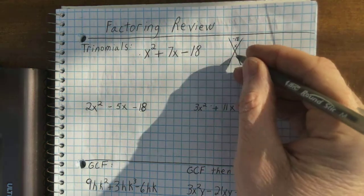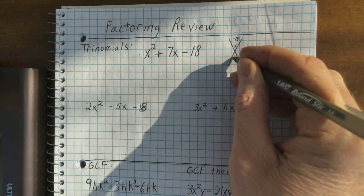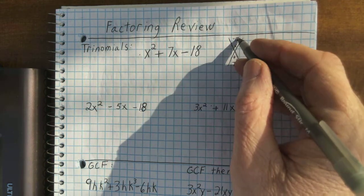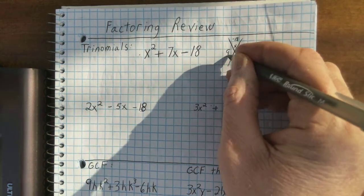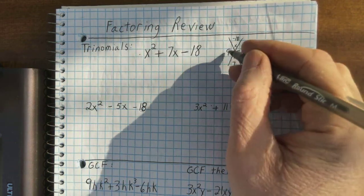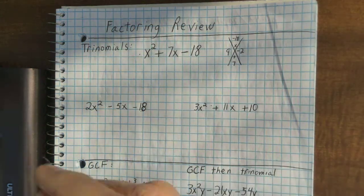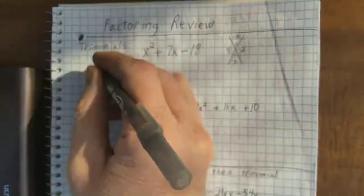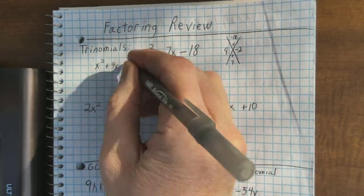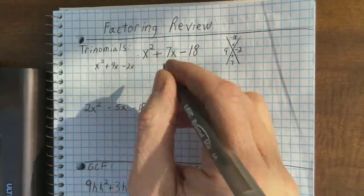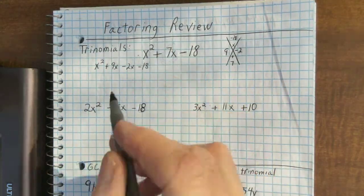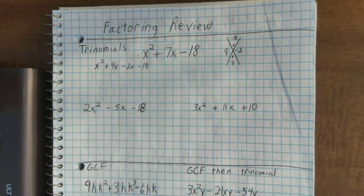So when we're factoring trinomials, now I got negative 18 and 1 that I multiply together. So two numbers that multiply to negative 18 and add to 7. And I know 9 times 2 is 7. And I think we can work with that and make the 2 negative. 9 times negative 2 is negative 18. 9 plus negative 2 is 7. So if I split up the 7x into x squared plus 9x minus 2x minus 18.